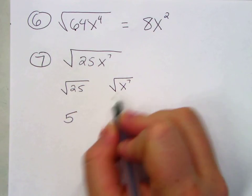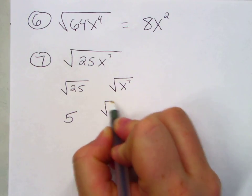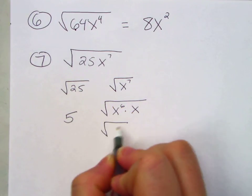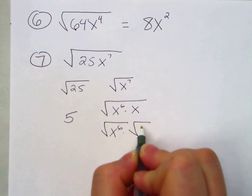Now when it's even, when it's odd, what do we do? We need to make it even. x to the 6th times x. x to the 6th radical x.